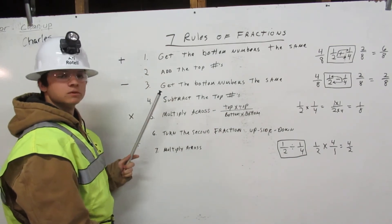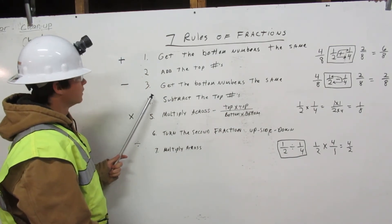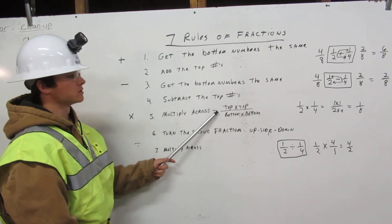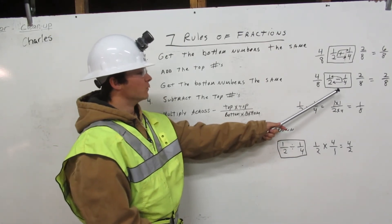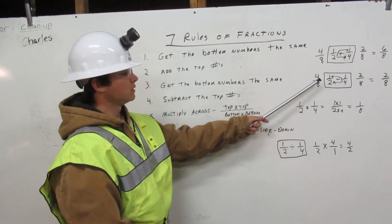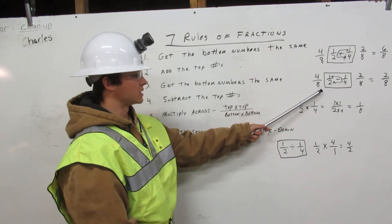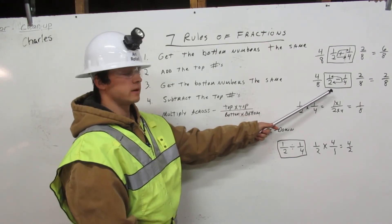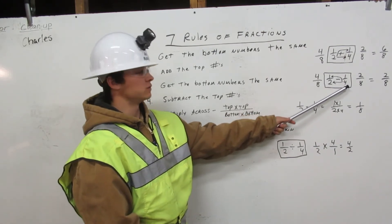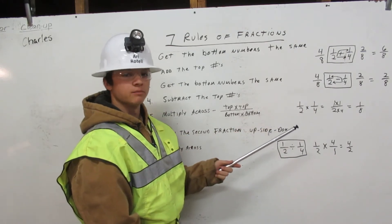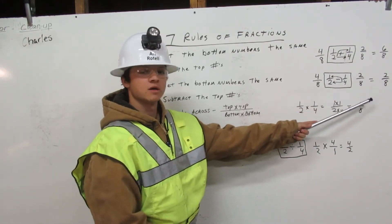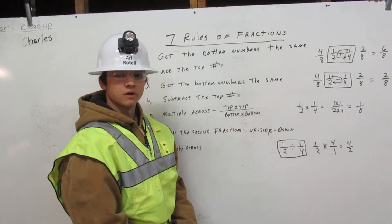Next, we will subtract. There are two rules: get the bottom numbers the same and subtract the top numbers. Here's an example: one half minus one quarter. Four times one equals four, and four times two equals eight. Then we go the other way: two times one equals two, and two times four equals eight. Now we will subtract the top numbers: four minus two equals two, and we will carry the eight. That is how you subtract all fractions.